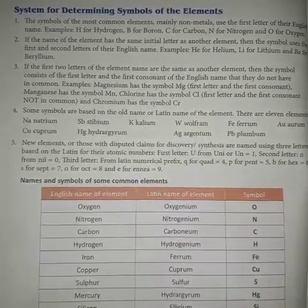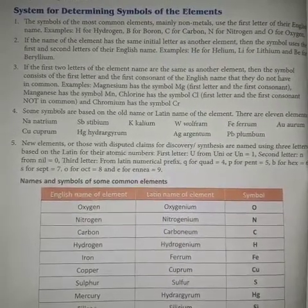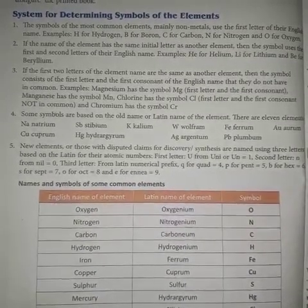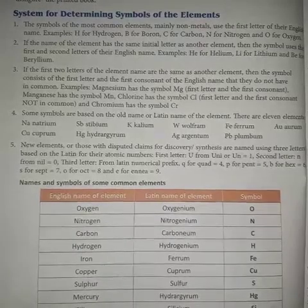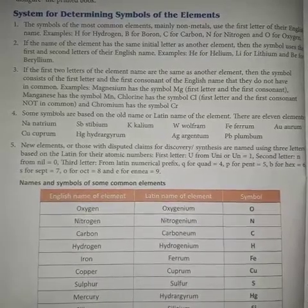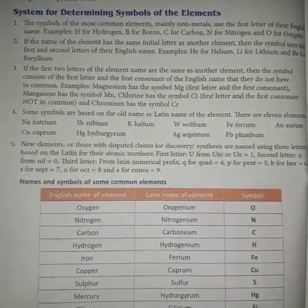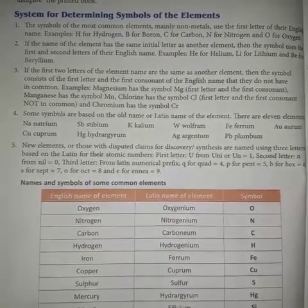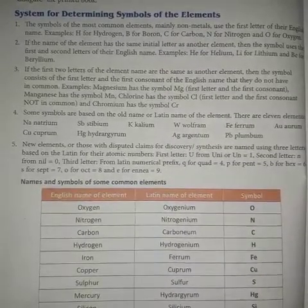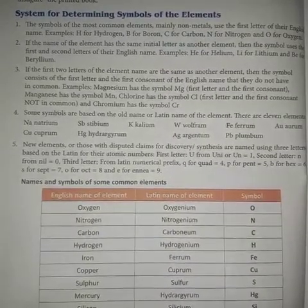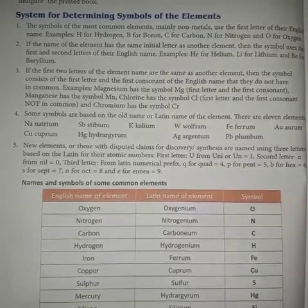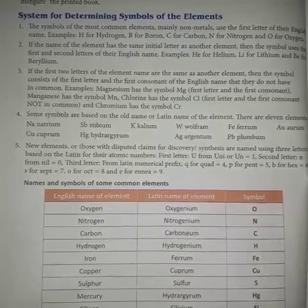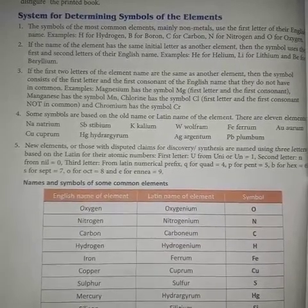First of all, the symbols of most common elements, mainly non-metals, use the first letter of their English name. For example, H for hydrogen, B for boron, C for carbon, N for nitrogen, and O for oxygen. But historically it has not always been the same.